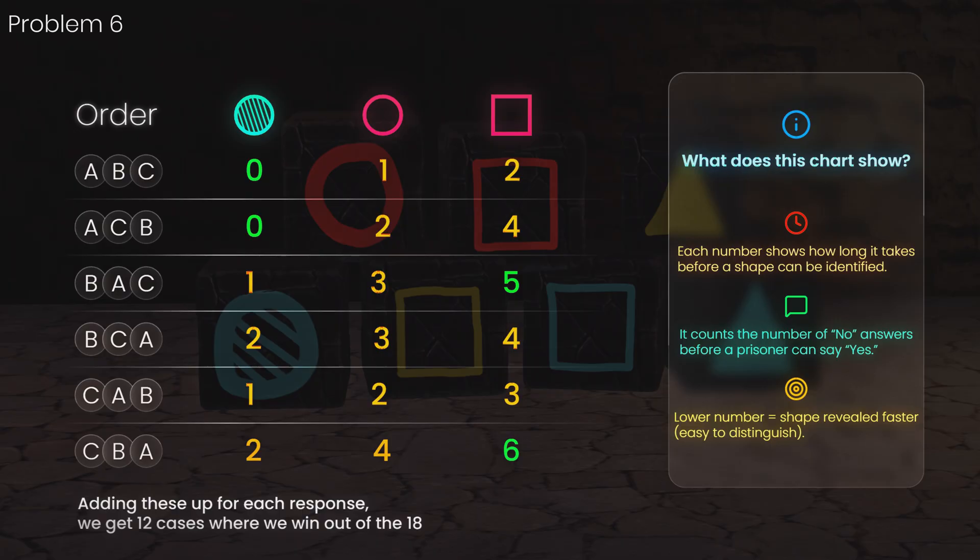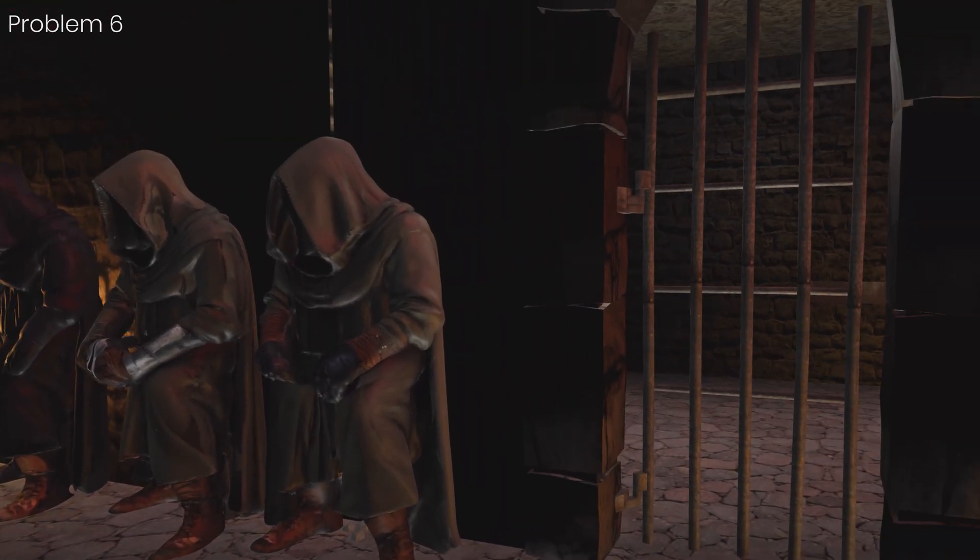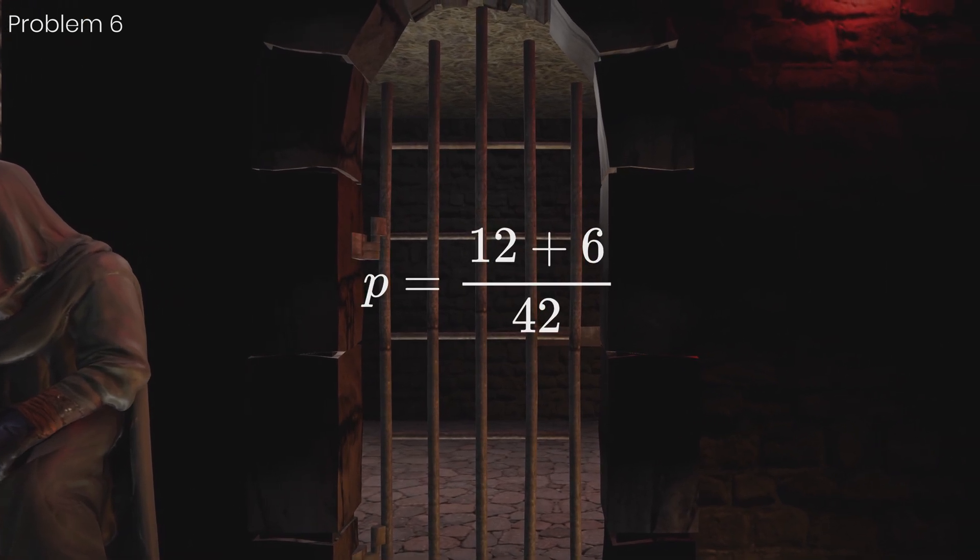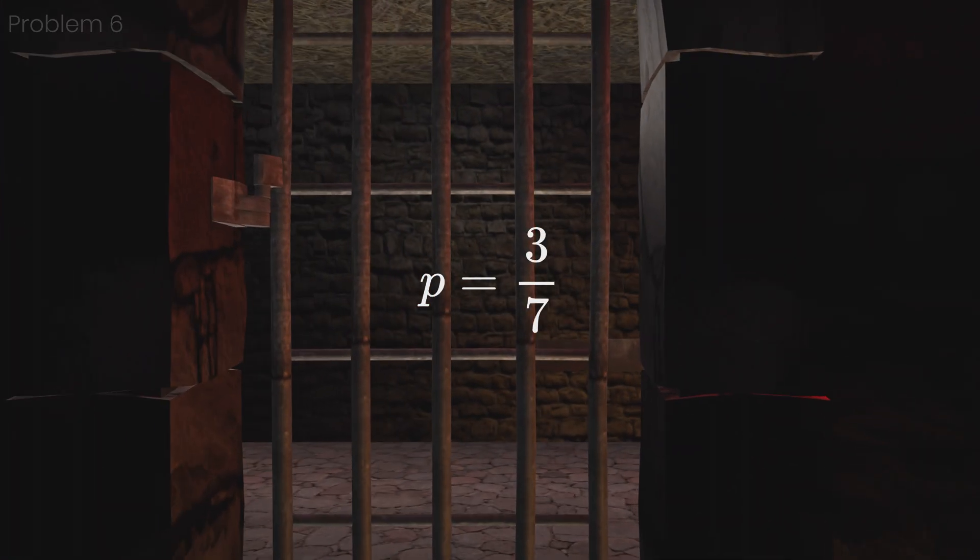The overall probability for winning will be 12 plus 6, all over 42 because we can only guess right a quarter of the time for the 24 hard cases. In the end, this all simplifies to 3 over 7.